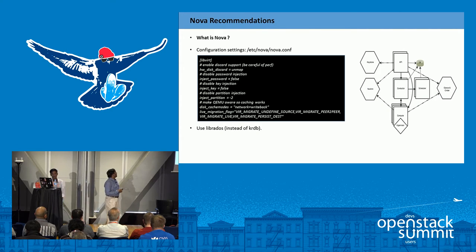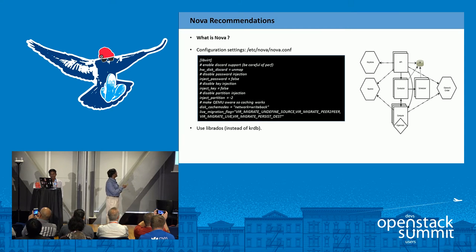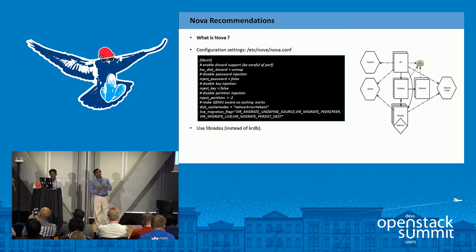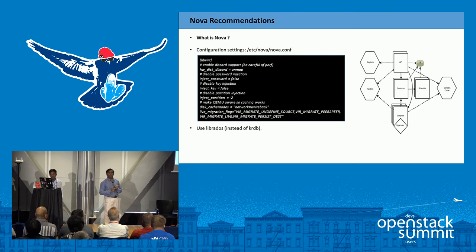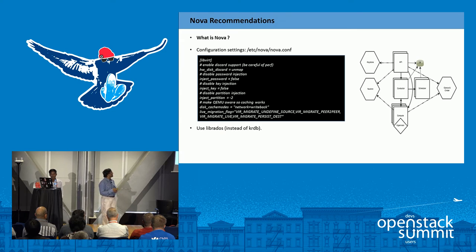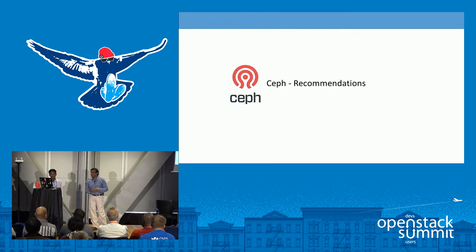Coming to Nova, I do not have many recommendations except this default configuration. I recommend using LibRBD instead of KRBD. LibRBD will link with the LibVirt configuration where we need to enable cache — that will give more read IOPS and better read performance.